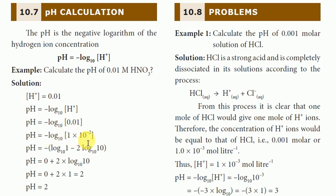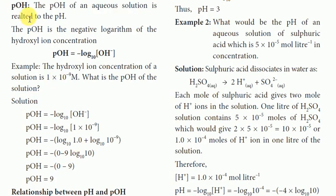So pH equals minus log10 of 1 × 10⁻². Therefore pH equals minus(−2) which gives pH equal to 2. The OH⁻ ion concentration of an aqueous solution is related to the pH.